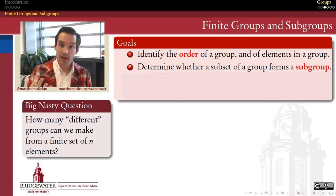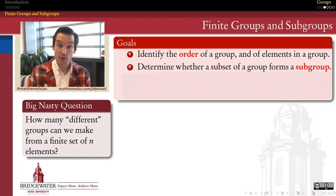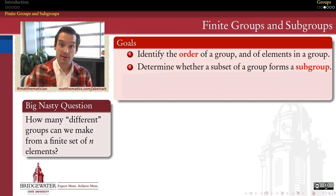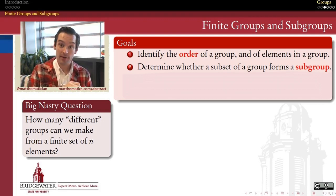A subgroup is a subset of elements within a group that itself forms a group in its own right, using the operation inherited from the larger group. In this video, we want to begin to explore the definition of a subgroup and look at some examples — not just the kind we've already seen when you look at powers of a single element, but also subgroups of different types as well.